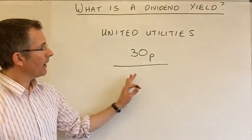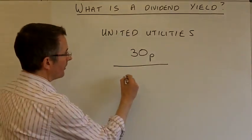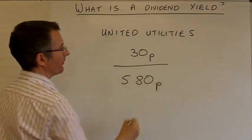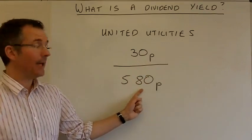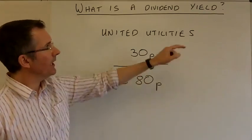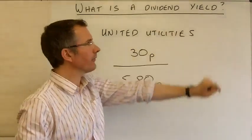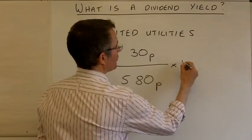So as an income investor, I'd look to compare that to the current share price. And let's say that's around £5.80 or 580 pence. So, 30p over 580 pence. And yield suggests I'm looking at a percentage as the answer. So how do I make this into a percentage? The answer is I just multiply by 100%.